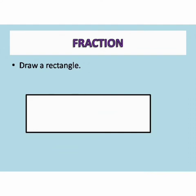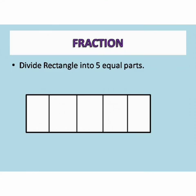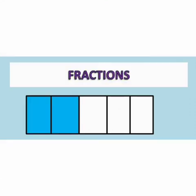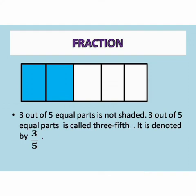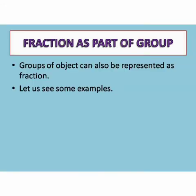See another example. Draw a rectangle and divide it into five equal parts. Shade two parts. Now, we have to represent the shaded part in fraction. Here, two out of five equal parts is shaded. Two out of five equal parts is called two fifth. It is denoted by two upon five. Three out of five equal parts of the rectangle is not shaded. So, three out of five equal parts is called three fifth. It is denoted by three upon five.